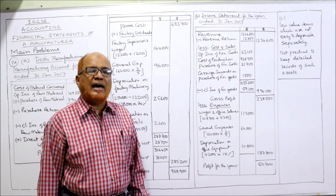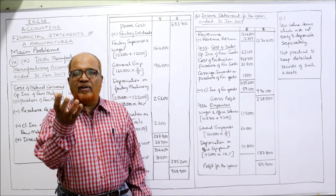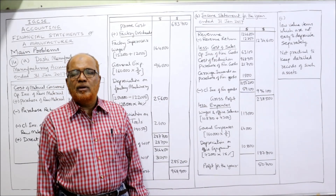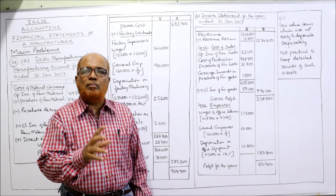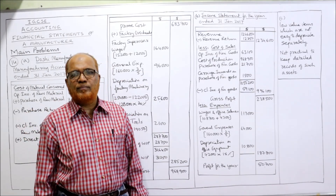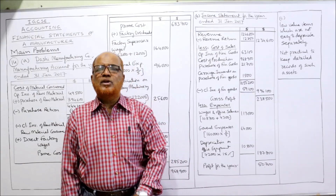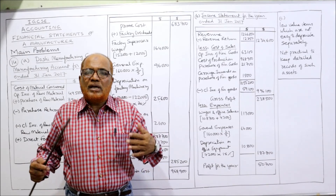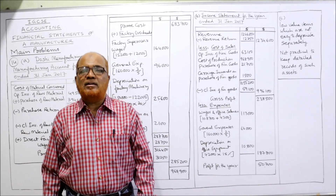The reason is that the value of loose tools is very small compared to machinery or equipment. When small-value assets are involved, it is more convenient to use the revaluation method rather than straight-line or reducing balance. These are low-value items which are not easy to depreciate separately — there are many such small-value assets, so it is not practical to calculate depreciation on each one individually.